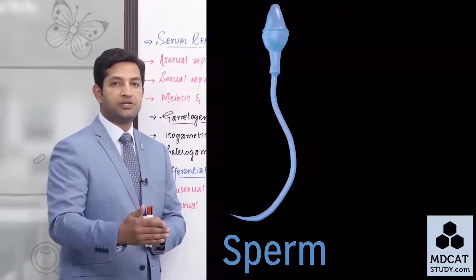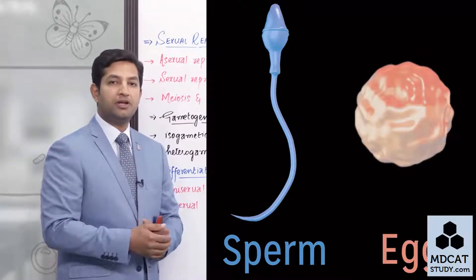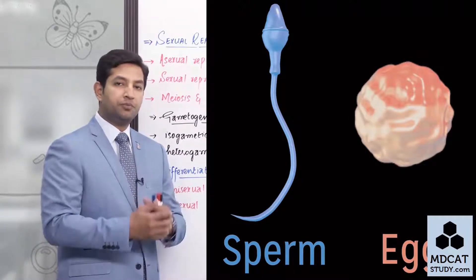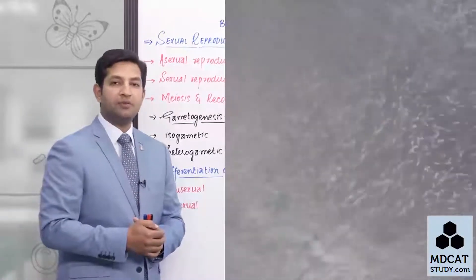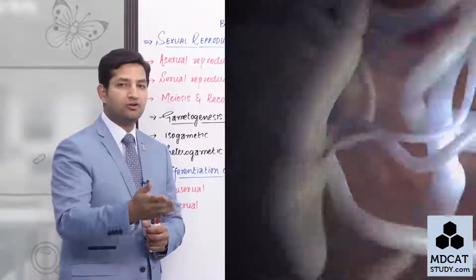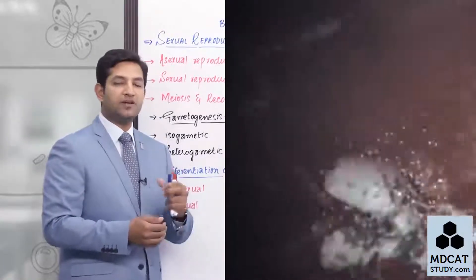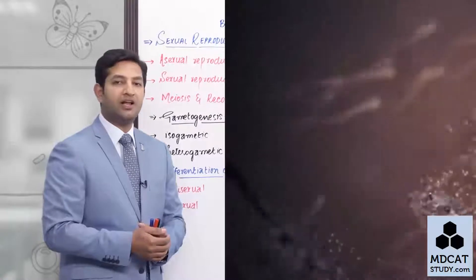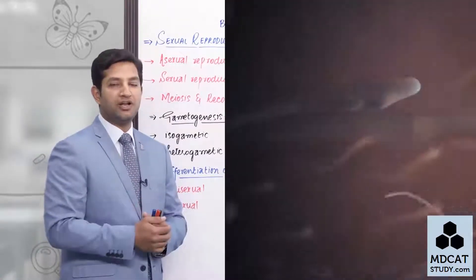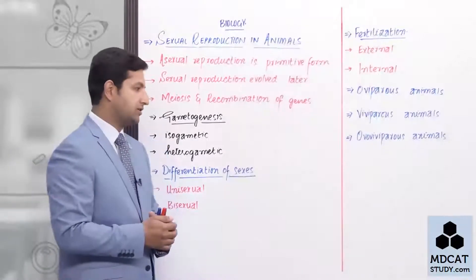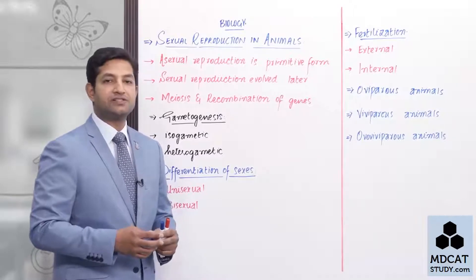The male gametes are entirely different morphologically as compared to the female gametes. Female gametes are always sessile — they do not move from one place to another in search of the male gametes. This is about gametogenesis and the differentiation of sexes — the existence of different genders within different organisms.